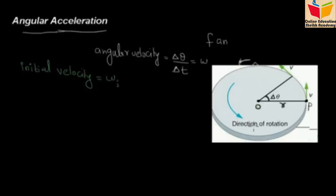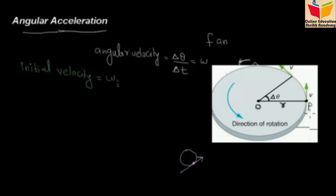The direction of the angular velocity is along the tangent. What does the tangent mean? The tangent is a line that touches the circle at one point only. The velocity direction is along the tangent, which will change the direction as the particle moves.